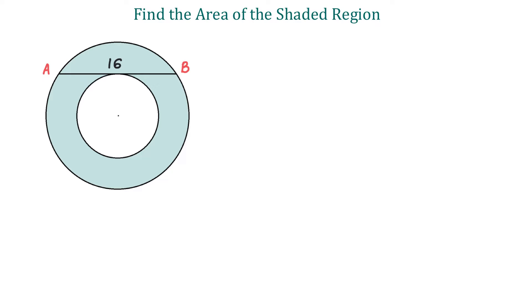Hello, in this figure we have two concentric circles and a chord AB. The chord has 16 units and it's tangent to the smaller circle.